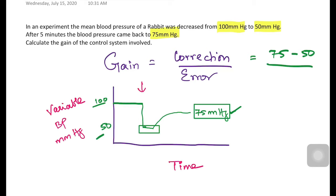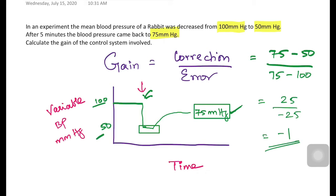The error is the remaining error — the difference between the final corrected value and the original set point. So error equals 75 minus 100, which is minus 25. Therefore, gain equals 25 divided by minus 25, which equals minus 1. The gain of this control system is minus 1.